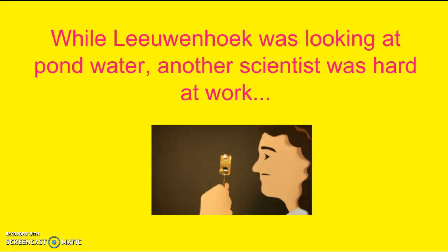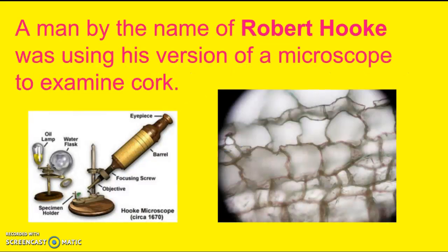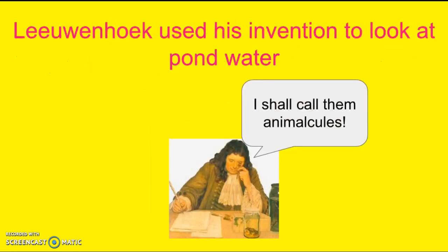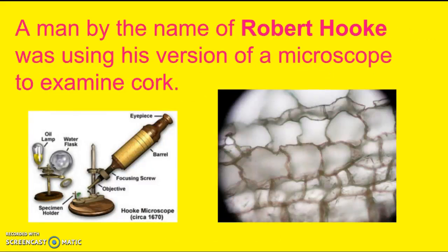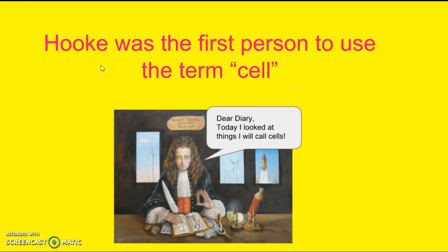While Leeuwenhoek was looking at pond water, another scientist was hard at work. A man by the name of Robert Hooke was using his version of a microscope to examine cork. You can see here how his microscope was much more involved than Leeuwenhoek's simple microscope. Hooke was the first person to use the term cell.